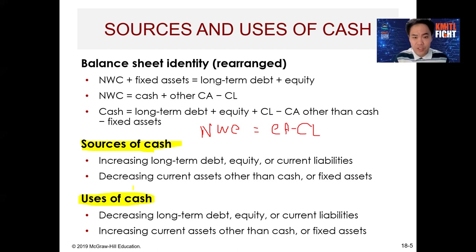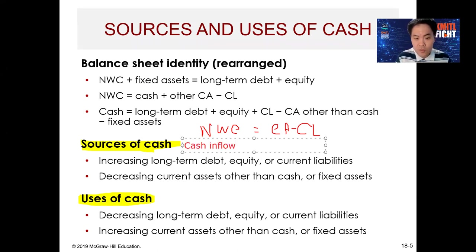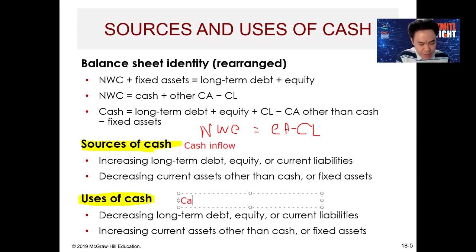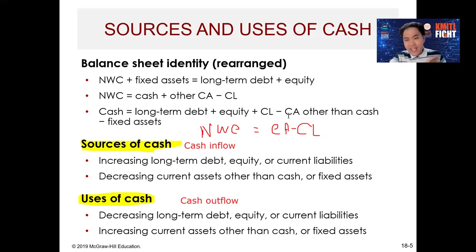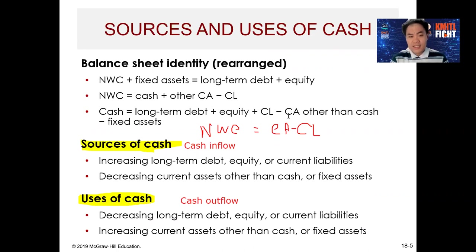When looking at short-term cash management, we focus on two things: source of cash and use of cash. Source of cash provides cash inflow, and use of cash tells you about cash outflow. Any action that provides a cash inflow is a source of cash; any action that results in a cash outflow is called a use of cash.